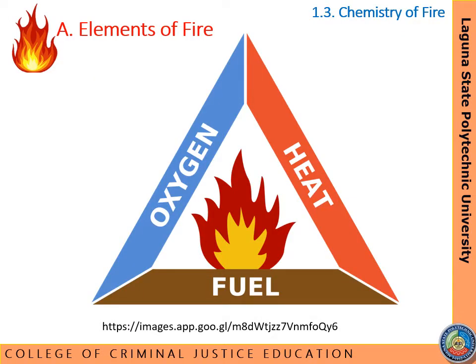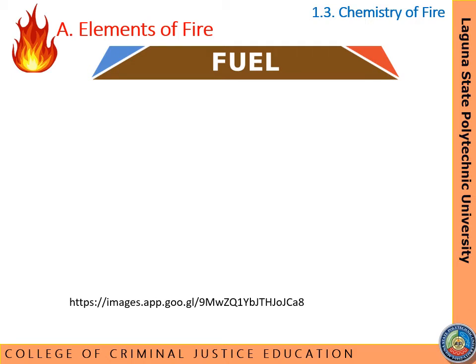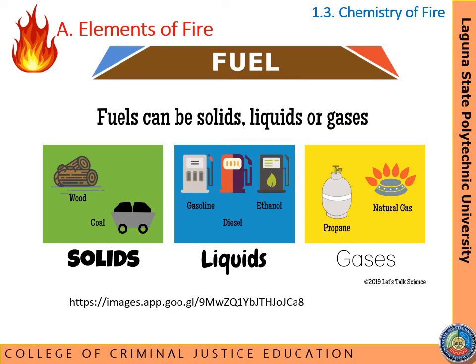The elements of fire include the fuel, the oxygen, and the heat, which is represented by the fire triangle. The first element of fire is fuel — these are combustible materials which vaporize and can be burned. For a fire to start there must be something to burn. Fuel is matter, and matter exists in three physical states: solid, liquid, and gas. In solids, molecules are closely packed together; in liquids, molecules are loosely packed; and in gas, molecules are free to move.